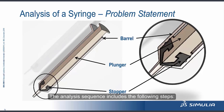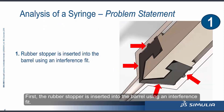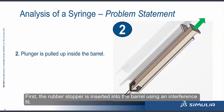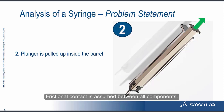The analysis sequence includes the following steps. First, the rubber stopper is inserted into the barrel using an interference fit. Second, displacement boundary conditions are applied to the plunger to slide it up inside the barrel. Frictional contact is assumed between all components.